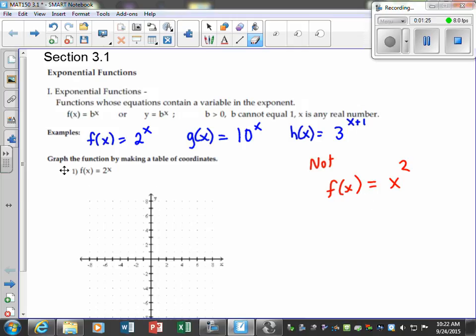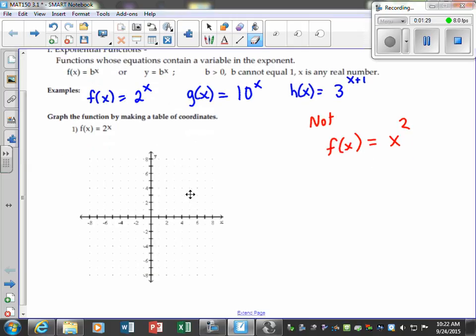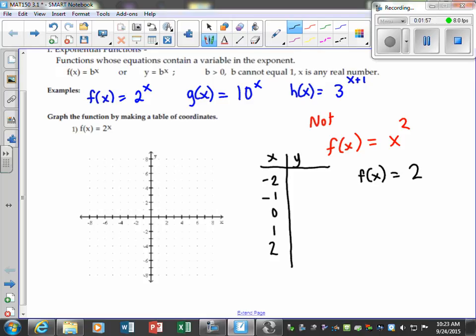We want to look at graphs of these types of functions, so we're going to make a table of coordinates. Let's just make an x y table, and let's just pick some values. Let's do negative 2, negative 1, 0, 1, and 2, and if we're plugging that into f of x is equal to 2 to the x power, so our function that's given to me is 2 to the x power. When we evaluate that, when we let x equal negative 2, we would have that expression.